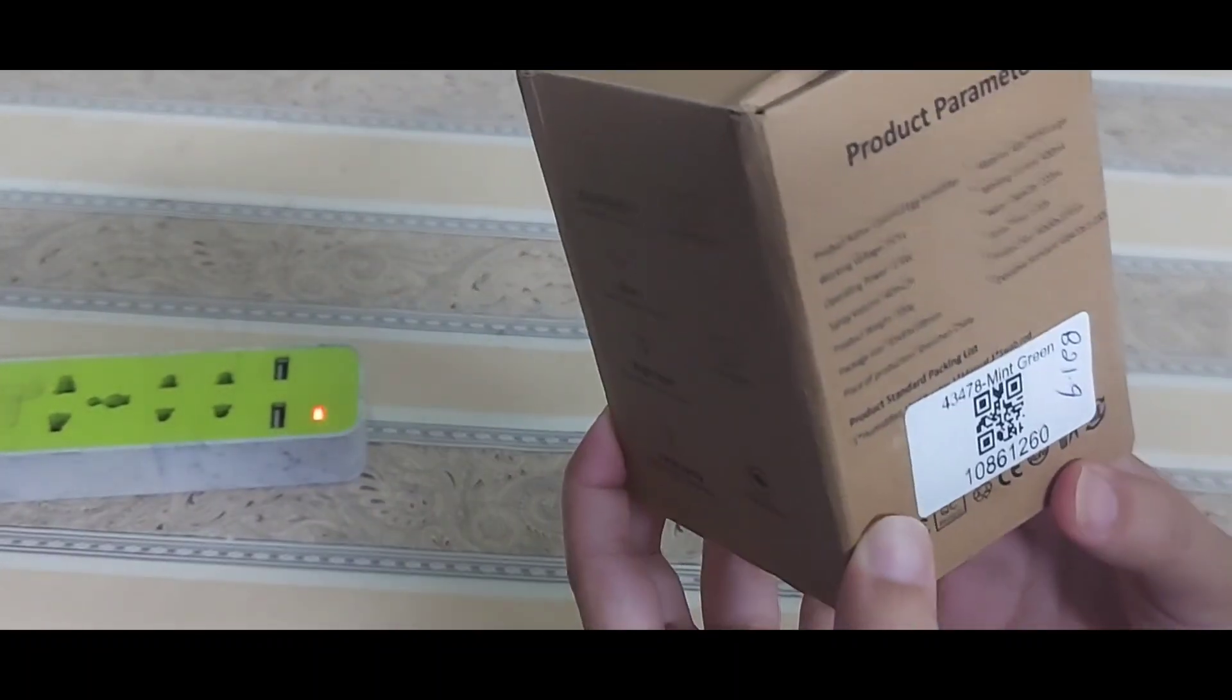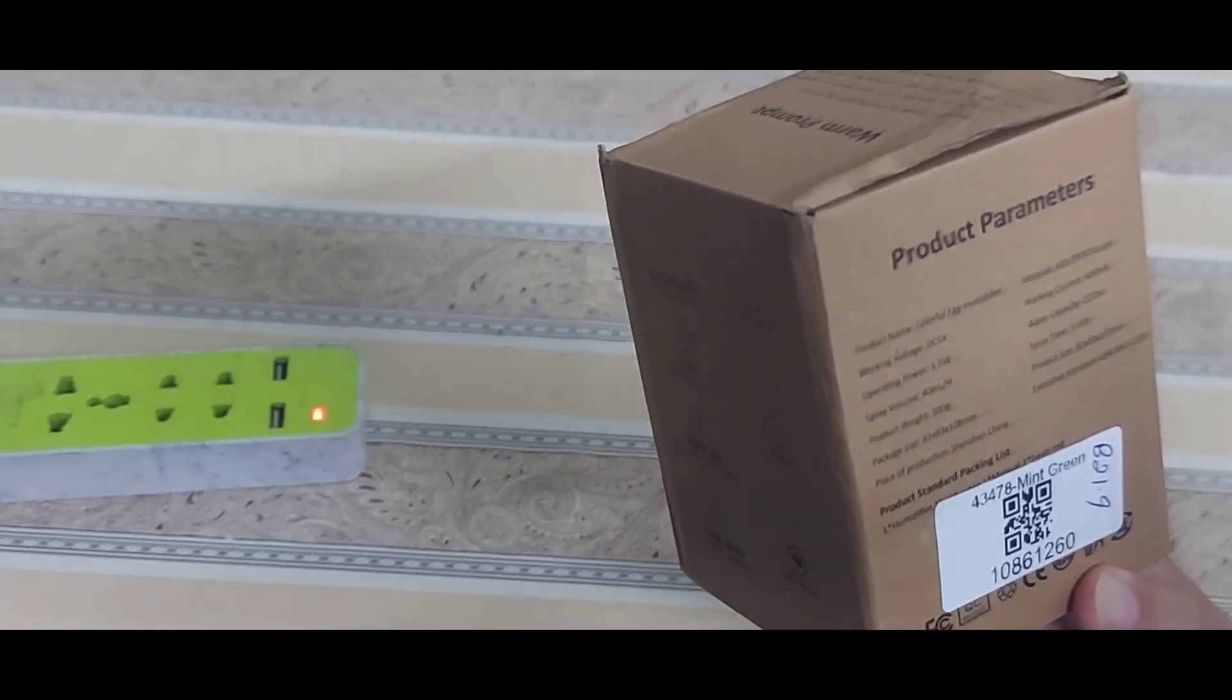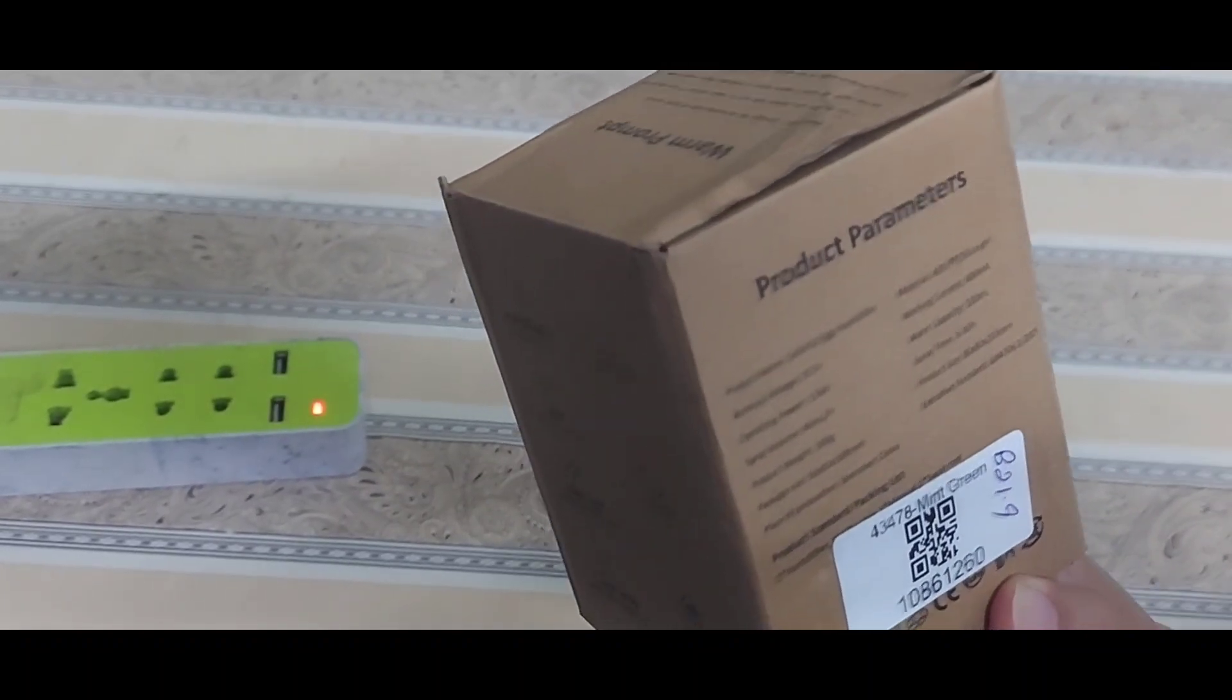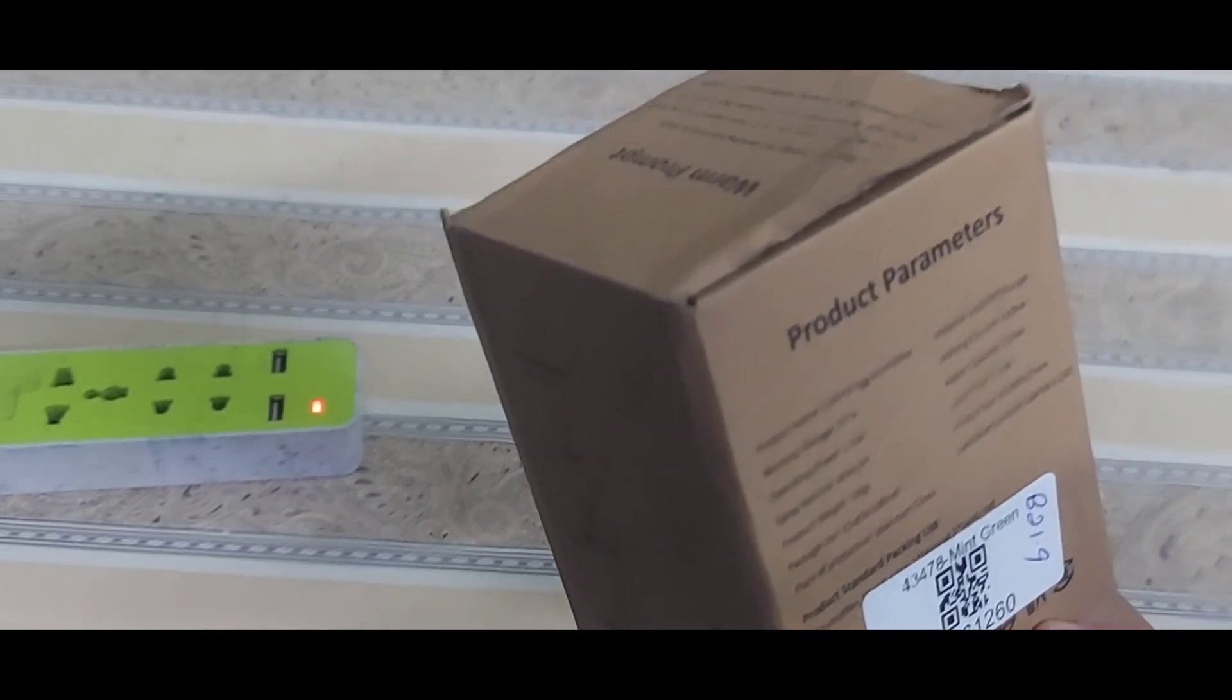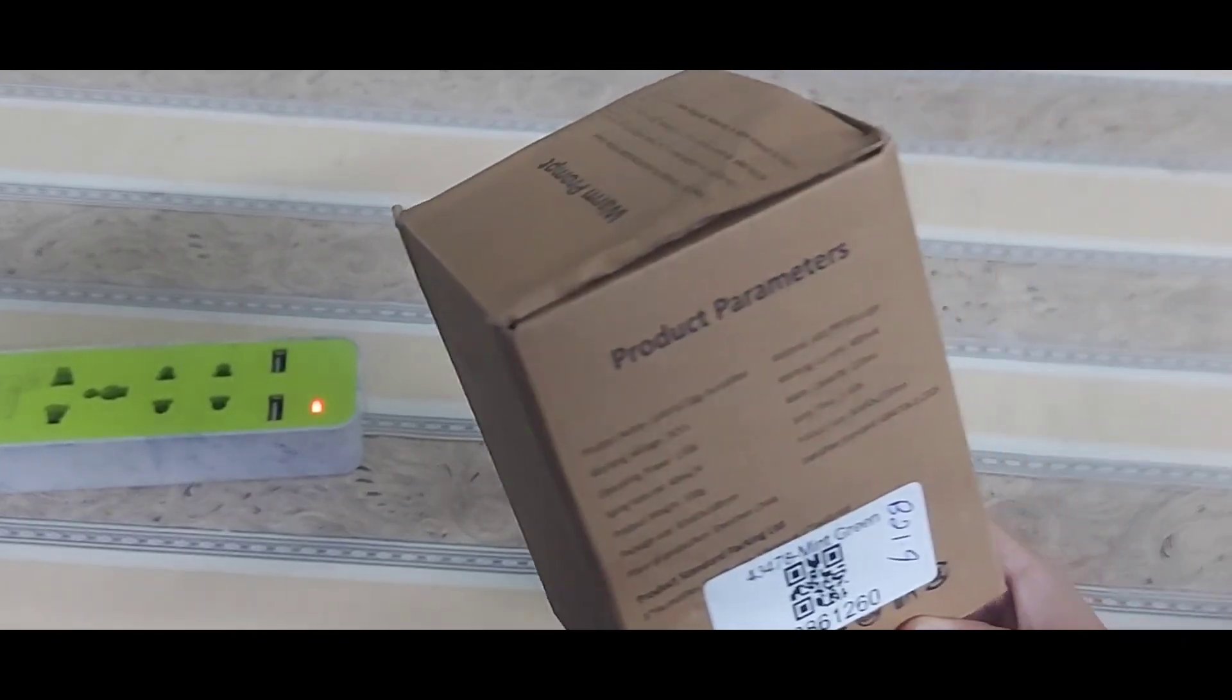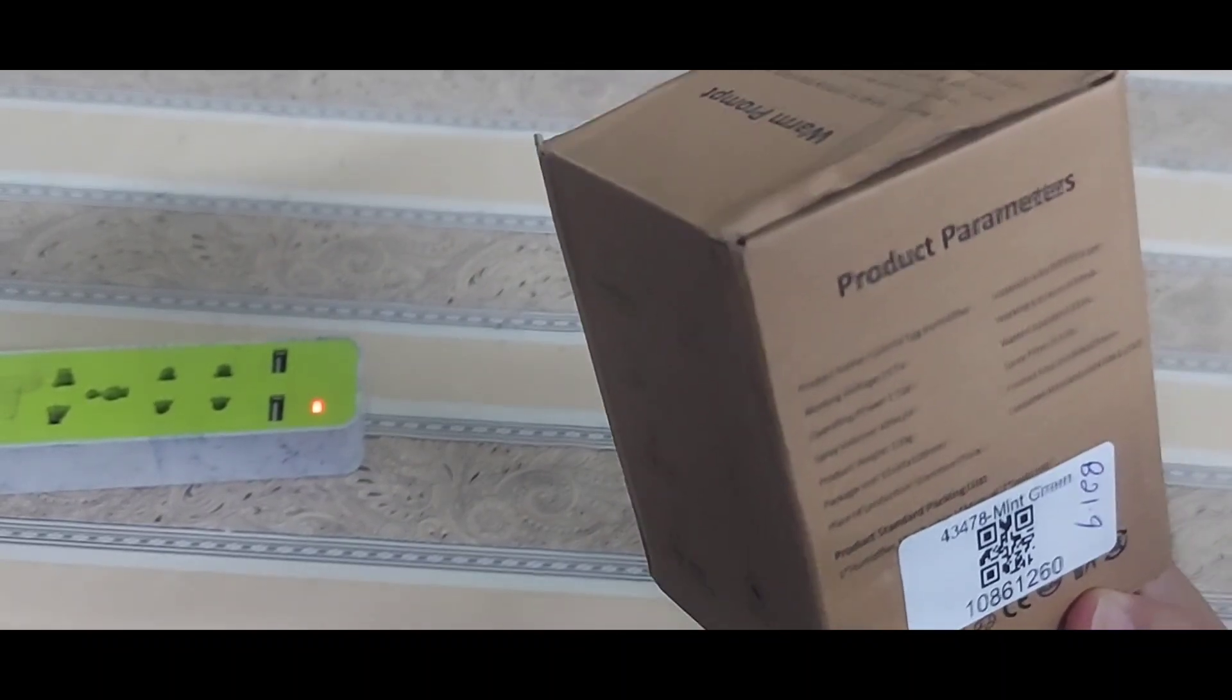Some product descriptions: it runs on 5 volt DC, its operating power is 1.5 watt, and it can spray 40 ml per hour. Its weight is 100 grams and it's made in China. It has water capacity for 220 ml and spray time of 5 to 10 hours.